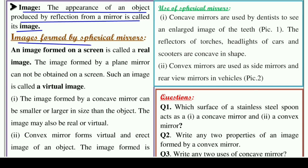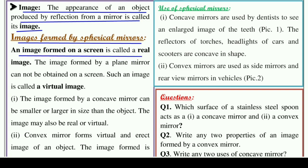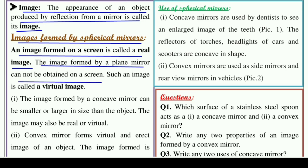Image is formed by spherical mirrors — अब spherical mirrors से जो images बनती हैं, वो कैसी होती हैं? An image formed on a screen is called a real image. जो screen पर image बनती है, वो हमेशा एक real image होती है, जैसे film में देखते हैं। The image formed by a plane mirror cannot be obtained on a screen — उसको screen पर project नहीं किया जा सकता। Such an image is called a virtual image.